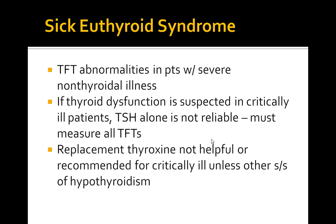In the late stages, you can see slow speech, hoarseness, loss of outer third of eyebrows, myxedema possibly, periorbital puffiness, bradycardia, pericardial and peritoneal effusions, and also atherosclerosis.